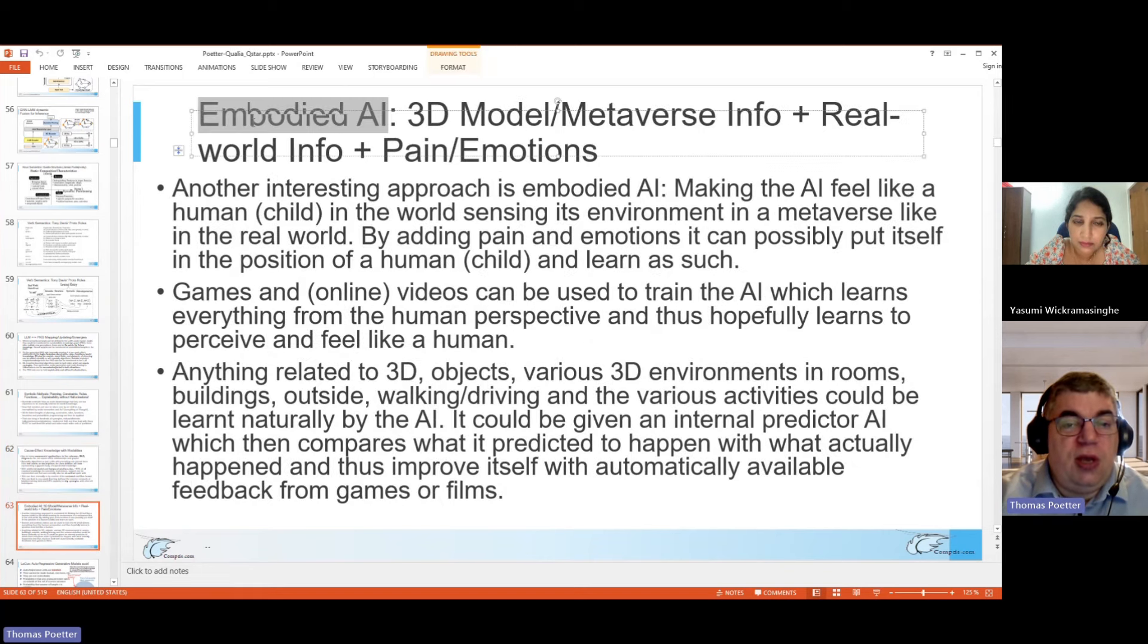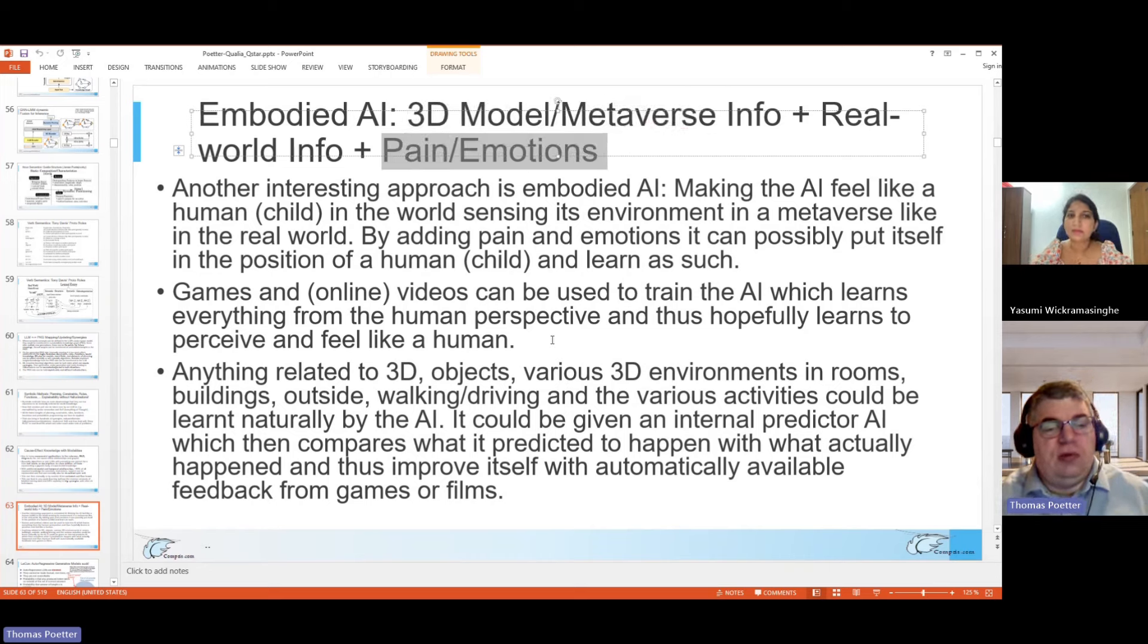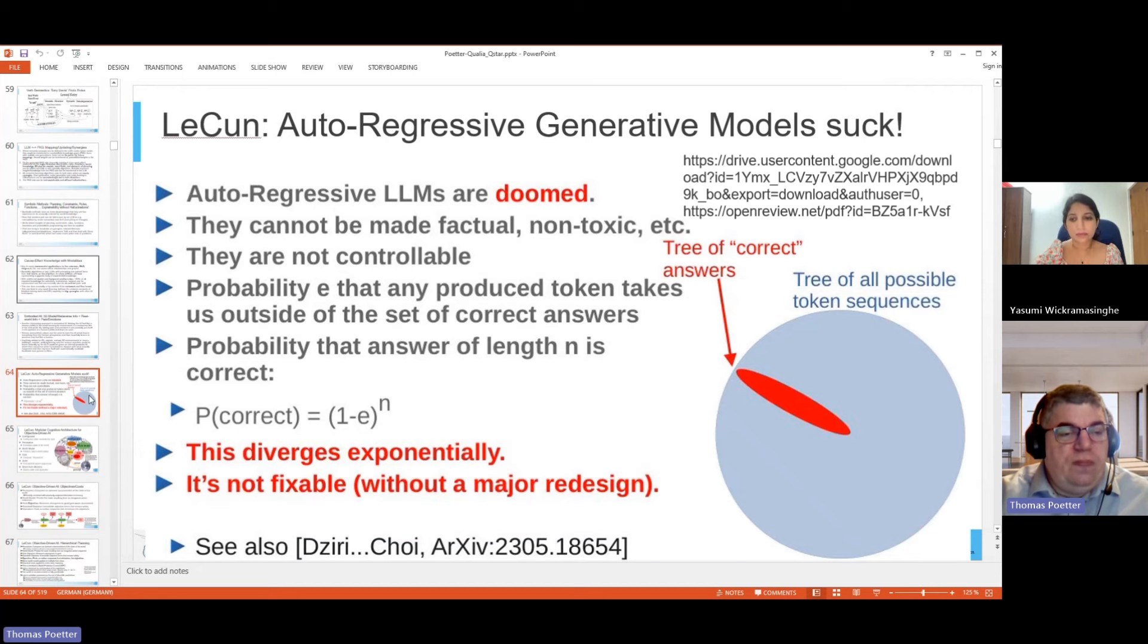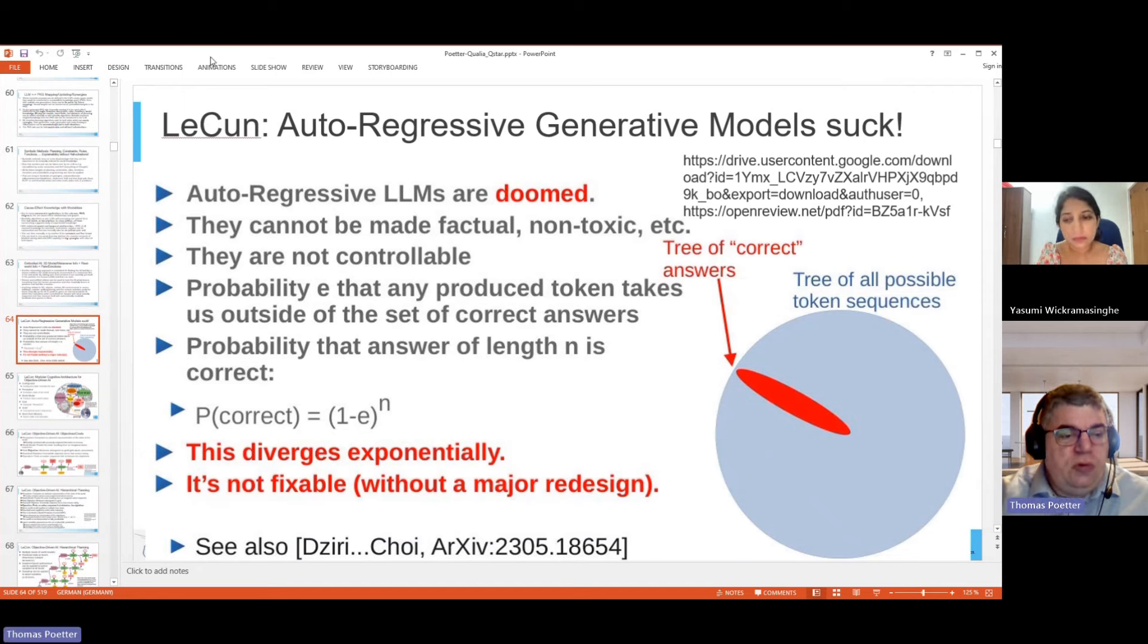Then there's the topic of embodied AI. That means 3D models, for example in the metaverse. Real world information may be combined with pain, emotions, and the entire theory of mind model. So a metaverse could be used as a training element.